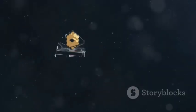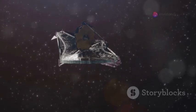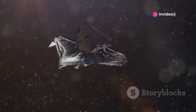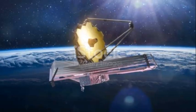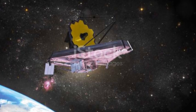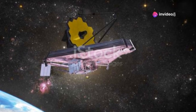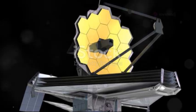But to do this, Webb must stay incredibly cold, minus 233 degrees Celsius, so its own heat doesn't blind its sensitive instruments. Even the smallest amount of warmth could interfere with its observations. That's why Webb is equipped with a five-layer sun shield, each layer thinner than a human hair, and together about the size of a tennis court. This sun shield blocks heat from the sun, earth, and moon, keeping the telescope in perpetual shadow.